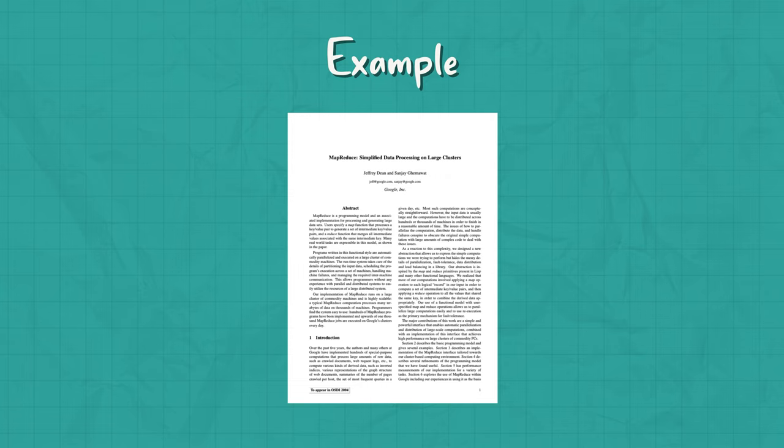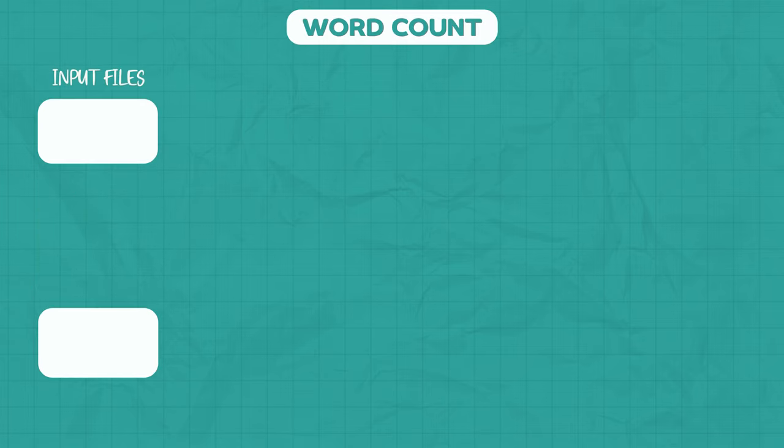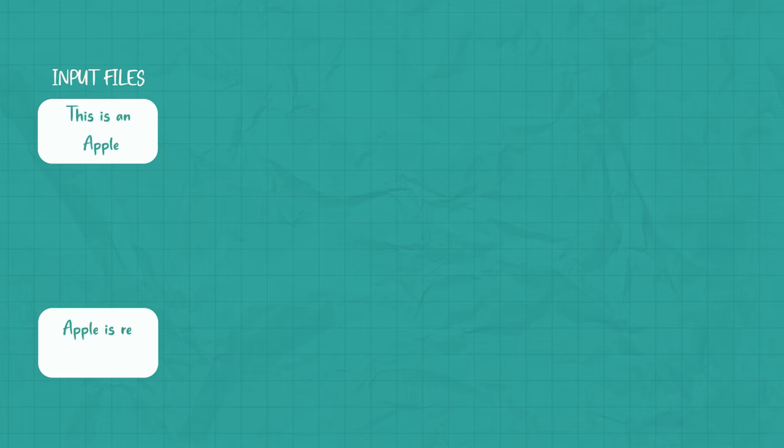Alright, with all these points in mind, let's understand it through an example, which I am taking from the same white paper presented by the Google engineers. So here I have a set of input files, and typically these input files will be distributed across several machines. For our example, for the sake of simplicity, I just have two input files. Our task here is to count the number of occurrences of each unique word across all the files. Here, our first file contains the sentence 'this is an apple,' and our second file contains 'apple is red in color.'